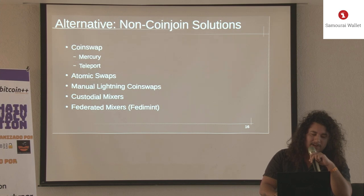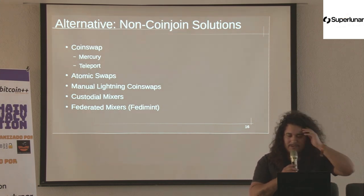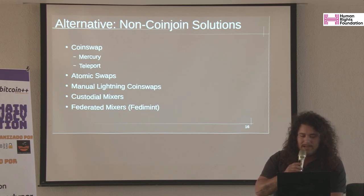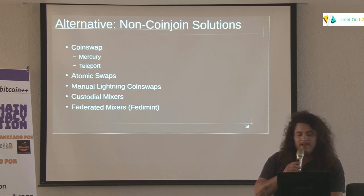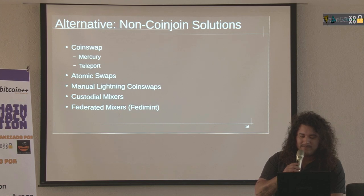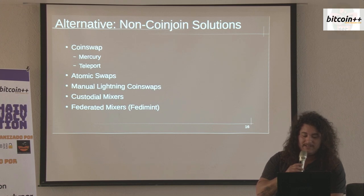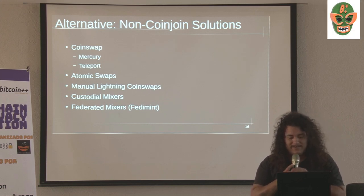Okay, the fun part — alternatives. We all know those popular CoinJoin solutions. Here are some cool ones you may not be aware of. CoinSwaps are a really interesting option. Also atomic swaps, and something I'm calling manual Lightning CoinSwaps — there's a manual way to achieve coin swaps on Lightning today that not many people probably use or know about. I'd normally not talk about custodial mixers, but I wanted to bring up FediMint, so I'll cover custodial mixers and then get into federated mixers.